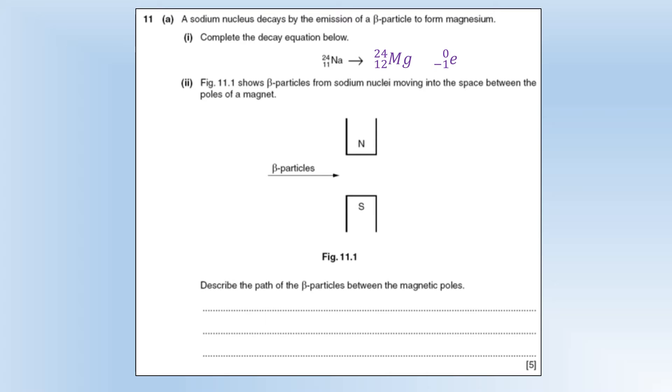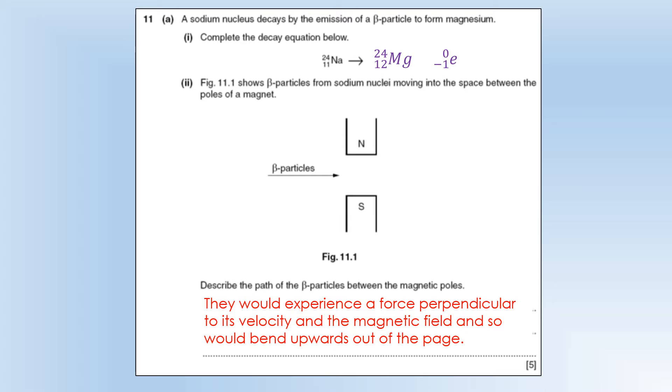So we've got beta particles going through the same field, so they would experience a force. Again, it's going to be perpendicular to the velocity and magnetic field, but it's going to bend upwards out of the page instead of into the page.